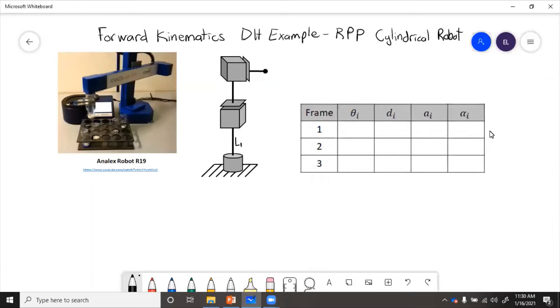In this example, we will find the DH parameters for a cylindrical robot. Now for this robot, we need to figure out which way each of these joints move and put our z-axis there.